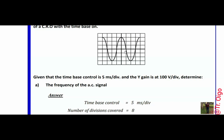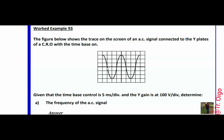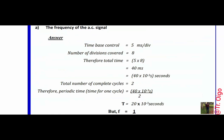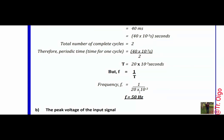So we have 4 divisions. Multiplying: 5 milliseconds times 4 gives a period T of 20 times 10⁻³ seconds. Applying the formula, frequency equals 1 over T, which is 1 over 20 times 10⁻³, giving a frequency of 50 hertz. For the peak voltage, we count the number of divisions upward, which is 3, and multiply by the Y gain: 100 volts per division times 3 gives a peak voltage of 300 volts.